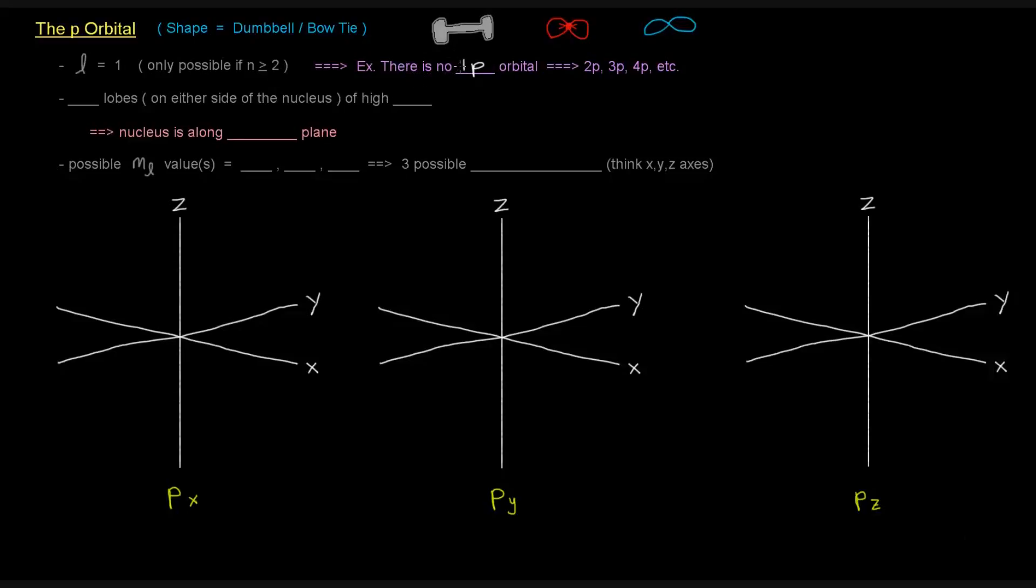That's not possible because that would mean n equals 1. And you can't have L equal to 1 if n equals 1. So the only possible p orbitals are 2p, 3p, 4p, and so on. You cannot have a 1p orbital.